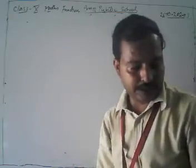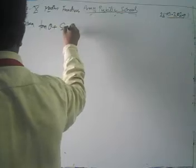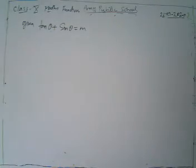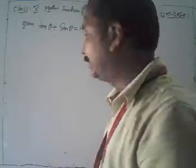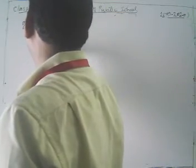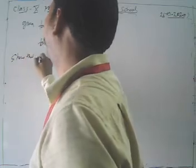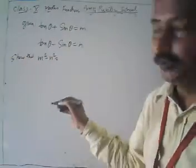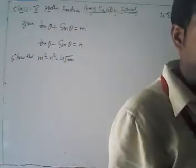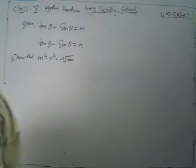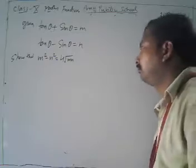Next last-year board problem: we have given that tan θ + sin θ = m, and tan θ − sin θ = n. We have to prove that m² − n² = 4√(mn).